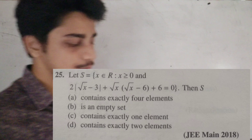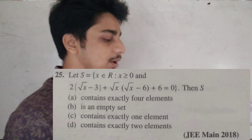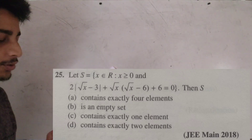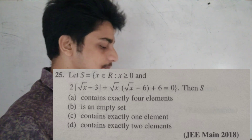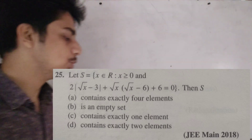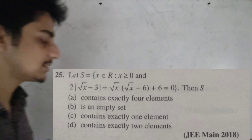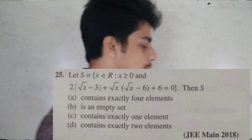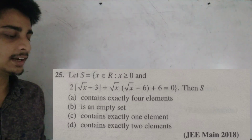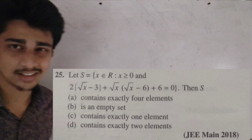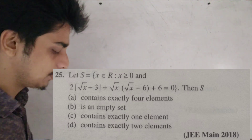Let S equal to x belonging to real numbers, x greater than or equal to 0, and 2|√x − 3| + √x·(√x − x) + x equal to 0. Then S is a set — I will show you the set.